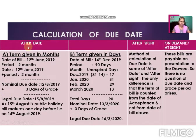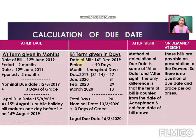Now for after date bills, there are two parts. If the term is given in months, you calculate month-wise. If the term is given in days, you calculate day-wise. For example, 90 days does not mean three months — whenever the period is given in days, you must calculate in days only.